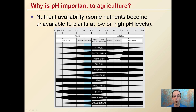Some nutrients become unavailable to plants at low or high pH levels. Here's a soil range — an extreme soil range — a pH of 4 to pH of 10. The thicker the bar is, the more available that nutrient is. Here in this blue, this slightly acidic column, is where we typically like to keep most pHs. Notice as we follow down this range, most nutrients are available in the greatest amounts, and this is why it's important to plants.